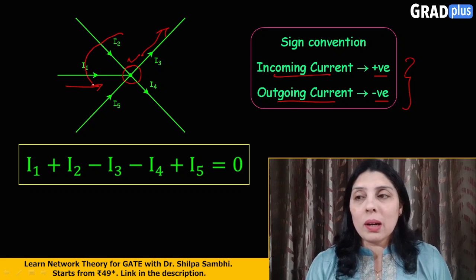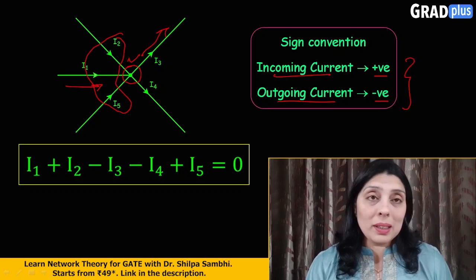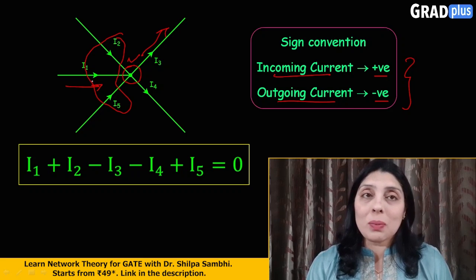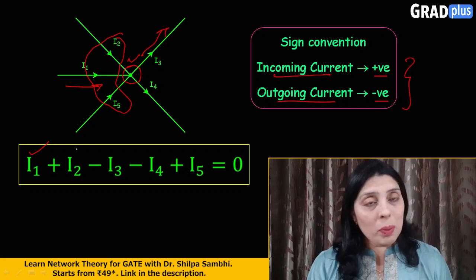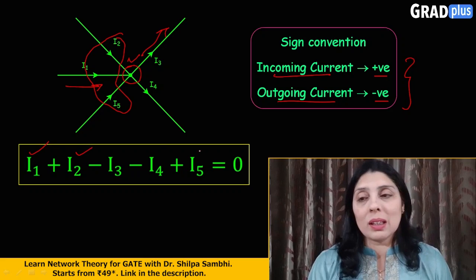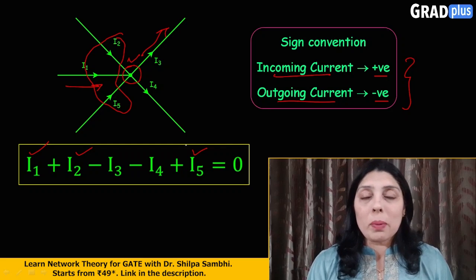Okay, and as per the sign convention which I have assumed, I would be writing these three currents with the positive sign. So in my equation I have written I1 with positive sign, I2 with positive sign and I5 with positive sign. Then what is happening?